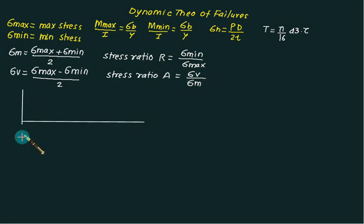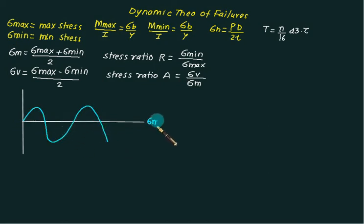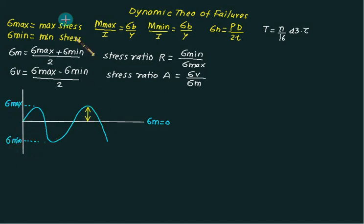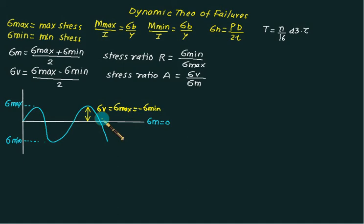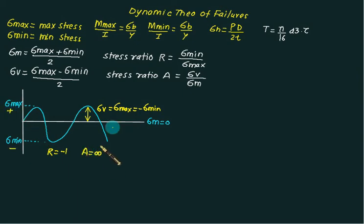If a stress variation cycle is given as fully reversed — fluctuating above and below the X axis — then the mean value is equal to zero. Sigma max and sigma min are exactly the same in magnitude but opposite in sign. This vertical distance from the mean value is called the variable stress. For this special case, sigma_v equals sigma_max, and sigma_min equals negative sigma_max. Therefore, stress ratio R = sigma_min / sigma_max = −1, and stress ratio A will be infinity because sigma_mean is zero.